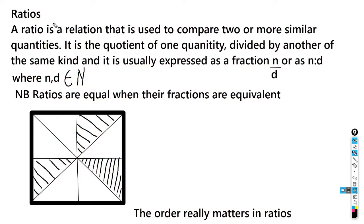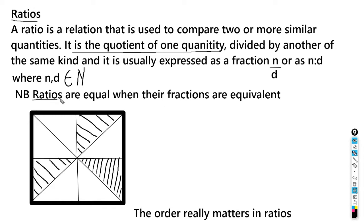Today we're going to be looking at ratios. A ratio is a relation used to compare two or more similar quantities. It is the quotient of one quantity divided by another of the same kind, and is usually expressed as a fraction n over d, or as n colon d, where n and d are elements of the natural number set. Note: ratios are equal when their fractions are equivalent.